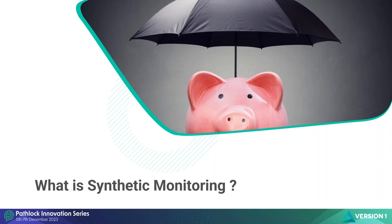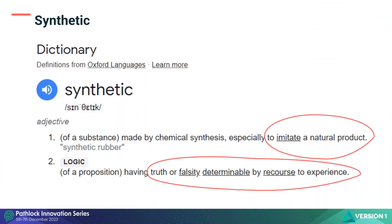Specifically, this session is about synthetic monitoring. What is synthetic monitoring? Let's look at the Oxford Languages definition of synthetic. There are two meanings: it's an imitation of a natural product — think chemical synthesis, like nylon imitating cotton — so it imitates something real. And in logic, the definition is to determine whether something is false or true, or to determine its current state. So synthetic is a false imitation of something in order to determine the state of something.